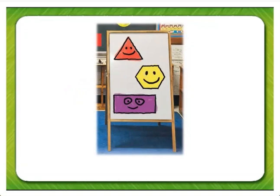Isabel also drew three shapes on her easel. What is the name of the red shape on the top?